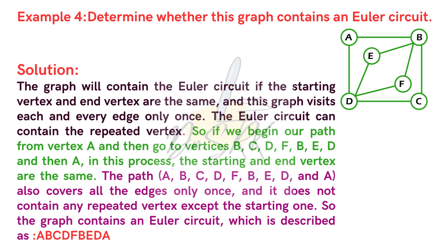The graph contains an Euler circuit, described as A, B, C, D, F, B, E, D, A. It does not contain any repeated edges. The vertex may be repeated only at the start. So this is the example on Euler circuit.